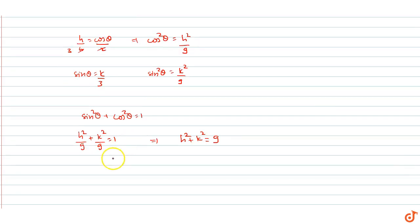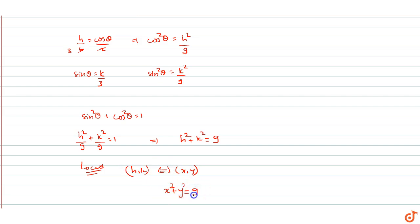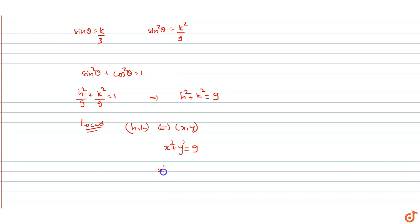Here (h, k) represents the locus. Replacing h, k with x, y gives x² + y² = 9. We can write this as x² + y² = 6 + 3. From the second ellipse equation x²/6 + y²/3 = 1, we had a² = 6 and b² = 3.